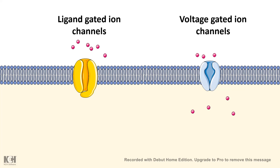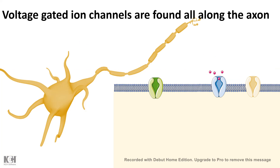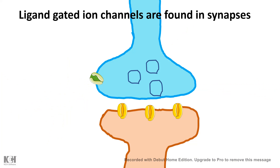There are also voltage-gated ion channels, which open or close depending on the voltage difference across the membrane. The ion channel binds an ion and its conformational change releases the ion on the other side. There are also ligand-gated ion channels, which open or close due to binding of a ligand — the ligand binds and the resulting conformational change leads to ionic influx through the channel. Voltage-gated ion channels are found all along the length of the axon in neurons, whereas ligand-gated ion channels are found specifically in the post-synaptic region.